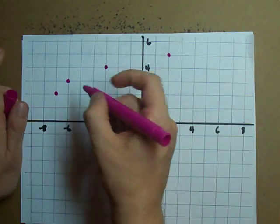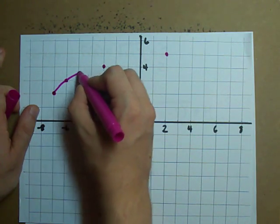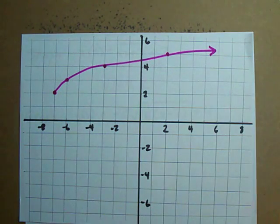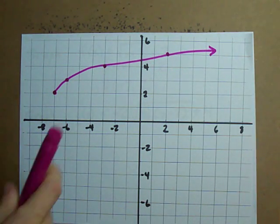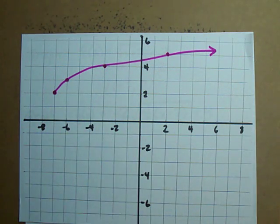So that's it. Draw a curve through those points. Start at your vertex. Draw it through the points and just put an arrow at the one end. That is a square root function. That's what the square root function is supposed to look like.